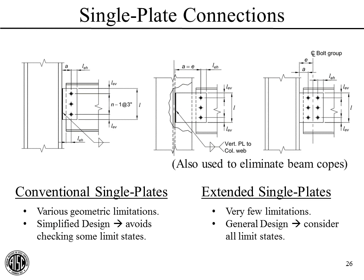These come in two basic varieties: conventional and extended single-plate shear connections. Conventional ones have a small dimension A and one column of bolts, with geometric limitations that allow a simplified design procedure, avoiding some more time-consuming limit states. Extended single-plate connections may have one column of bolts pulled out farther to clear column flanges, or two columns of bolts for more strength. With extended connections, there are very few limitations, so the A dimension can be larger, requiring a more general design procedure with several more limit states to evaluate.